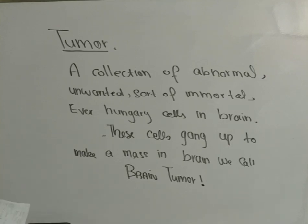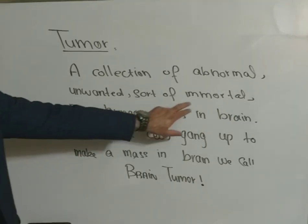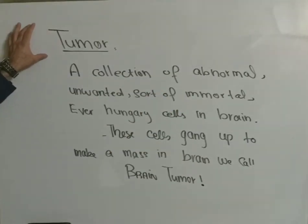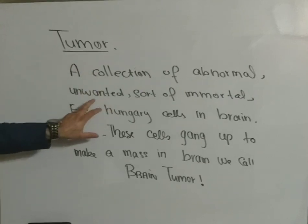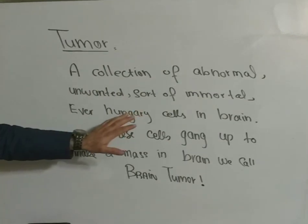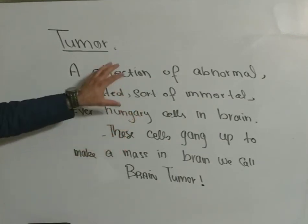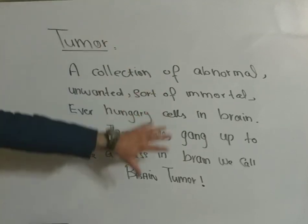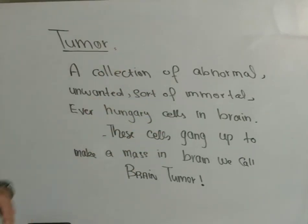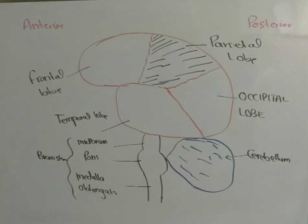Let's talk about some facts about tumor cells. These are unwanted cells — not wanted by the body. Normal cells in the brain die after performing their certain task, but tumor cells are unwanted, sort of immortal cells; they do not die. They are ever hungry and they take up the resources of the brain. These unwanted, immortal, ever-hungry cells gang up and accumulate together in the brain, and this is what we call the brain tumor.